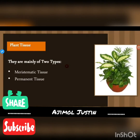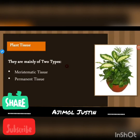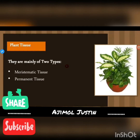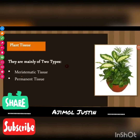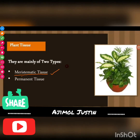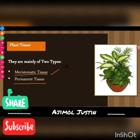Plant tissues are mainly of two types: meristematic tissue and permanent tissue. Meristematic tissue is a new term for you, so you should write and learn the spelling. The other is permanent tissue.